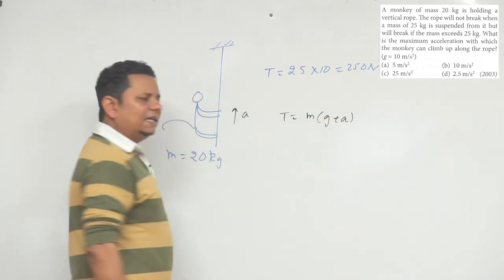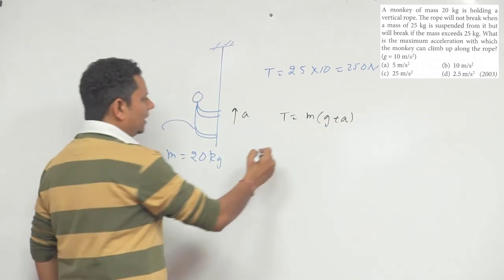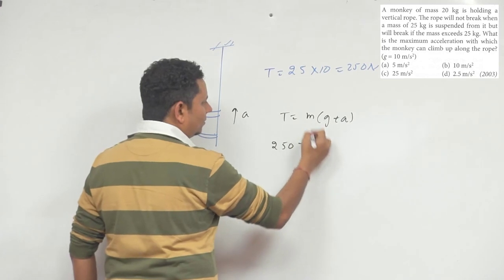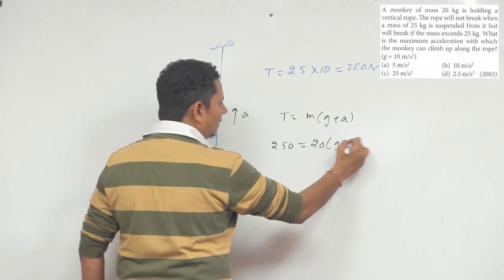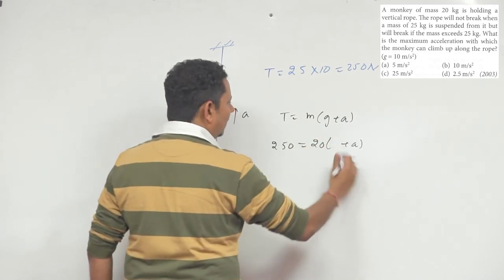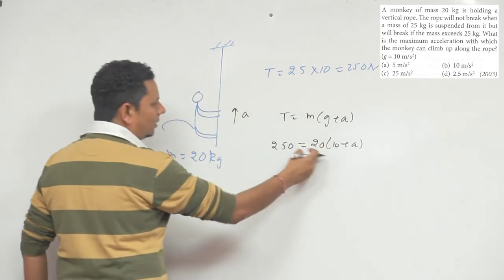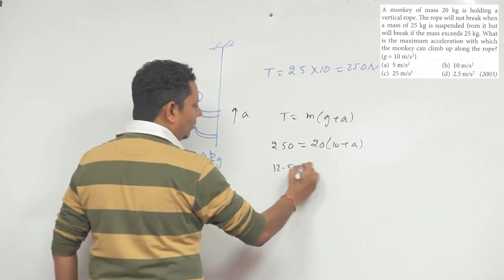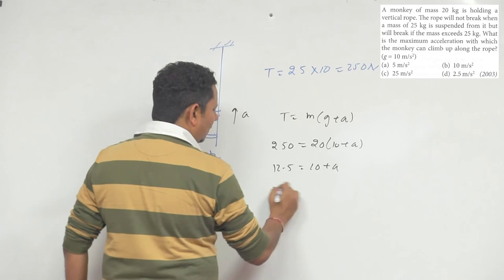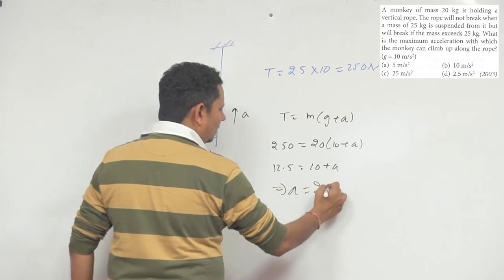So tension 250 is equal to mass 20 kg times (g plus a). g has value 10, so dividing, 12.5 is equal to 10 plus a. This implies a equals 2.5 meter per second square.